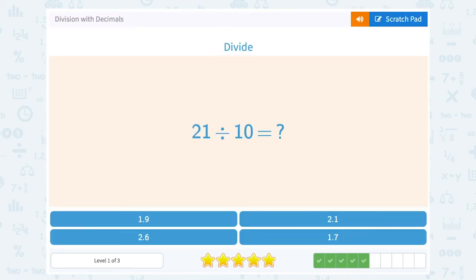21 divided by 10. Take a look at those answer choices. Which one is making it one place value smaller? That would be 2.1.